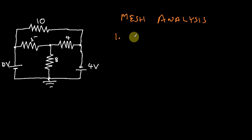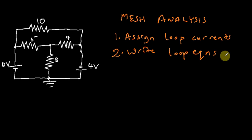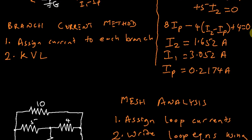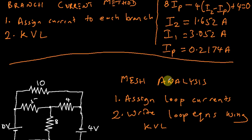The first step is we assign loop currents — we assume that there is a current inside each loop. Once we have done that, we write our loop equations using KVL, Kirchhoff's voltage law. Notice that this second step is the same as with branch current analysis. The difference is in the first step: with branch current analysis we assign a current to each branch, but with mesh analysis we assign a current to each loop.